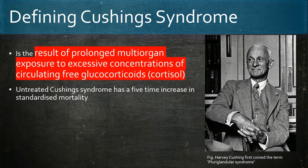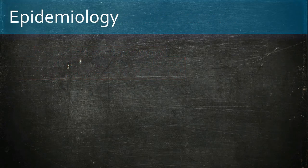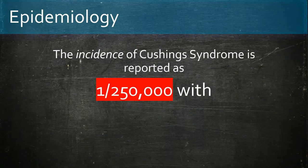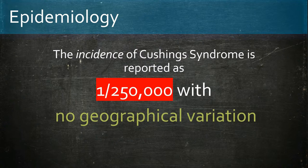Cushing syndrome was first discovered by Harvey Cushing, who described the condition as pluriglandular syndrome. The incidence of Cushing's is reported as one in a quarter of a million, with no geographical variation.